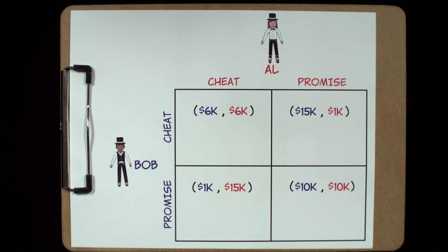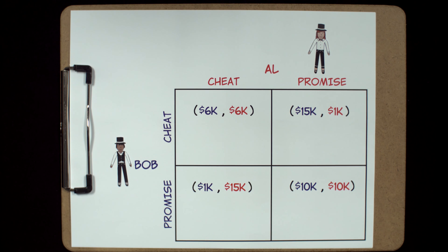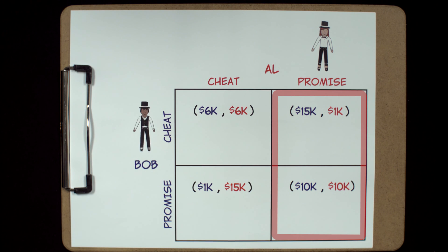So let's first look at Bob's best strategy based on Al's behavior. Al will either keep her promise to perform once a week or she'll break her promise and perform five shows. If she cooperates and performs one show, what is Bob's best strategy? If we just look at what he stands to gain, then his best option would be to cheat and perform five times a week and make $15,000 versus performing once a week and making $10,000.